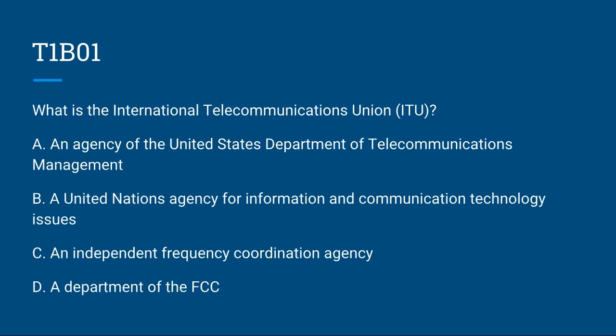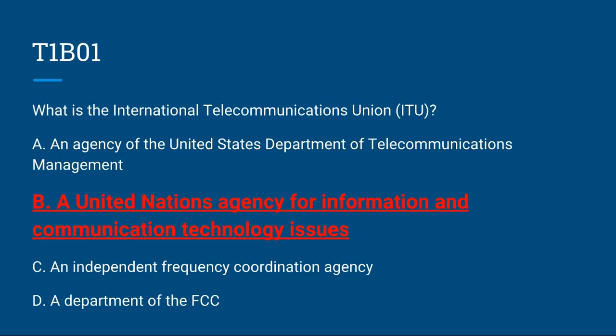T1B01: What is the International Telecommunications Union, abbreviated ITU? A, an agency of the United States Department of Telecommunications Management; B, a United Nations agency for information and communications technology issues; C, an independent frequency coordination agency; or D, a department of the FCC. The correct answer is B, a United Nations agency for information and communications technology issues.